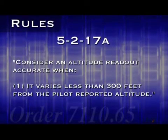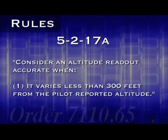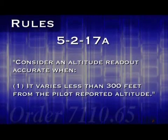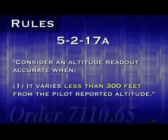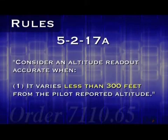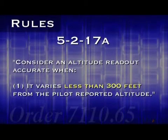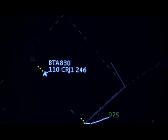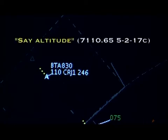There are some other methods for validating Mode C altitude information, but this one is the most basic and is what you'll be most concerned with in class. It's very important to note that the Mode C altitude must differ by less than 300 feet. If it varies by 299 feet, it's valid, but if it varies by 300 or even 301 feet, it cannot be used. Pilots are supposed to report their altitude when they check in on your frequency for the first time. If they do not, you must ask them by saying, 'Say altitude.'